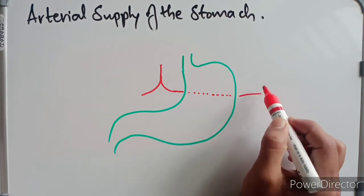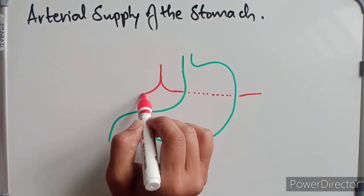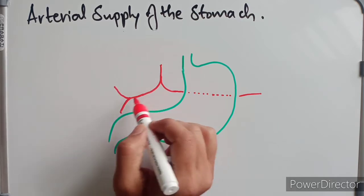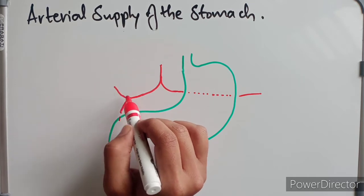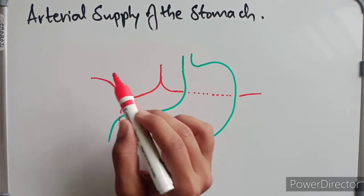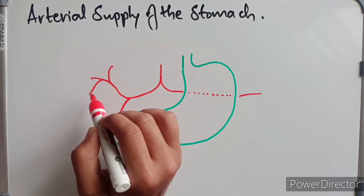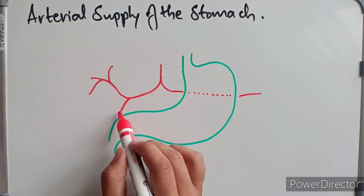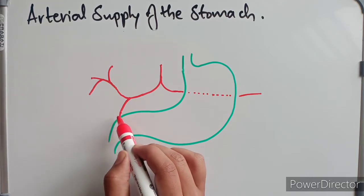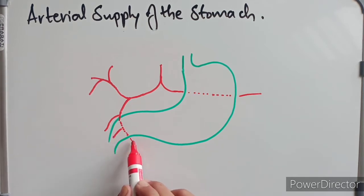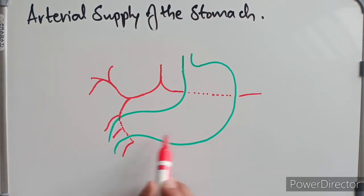The splenic artery goes behind the stomach to supply the spleen. The common hepatic artery divides into two main branches: the gastroduodenal artery and the hepatic artery. The hepatic artery further divides into the right and left hepatic arteries, with a small twig called the cystic artery going to the gallbladder. The gastroduodenal artery supplies the superior part of the duodenum via the superior gastroduodenal artery, passes behind the duodenum giving the retroduodenal artery, then gives the superior pancreaticoduodenal artery, and finally ends along the greater curvature as the right gastroepiploic artery.